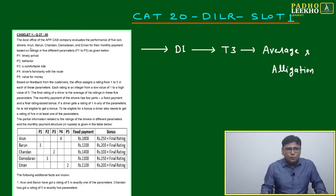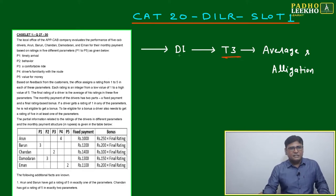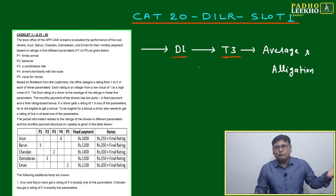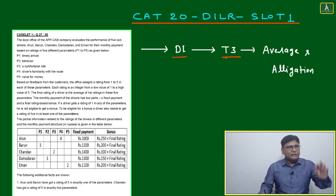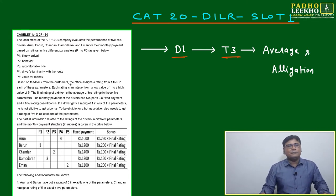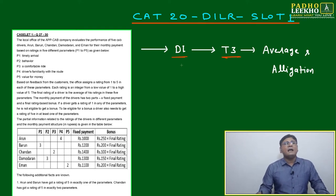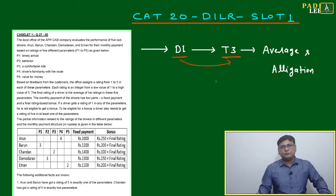After reading two to three lines, try to decide: is it a DI caselet or an LR caselet? Many times we cannot fully categorize — it could be mixed — but based on the data representation, the table given, or the proportion of data, you can decide it is DI. Once you decide it is DI, read two to three lines further and decide the type: Type 1, Type 2, or Type 3 — average and allegation.